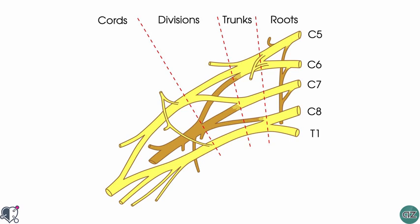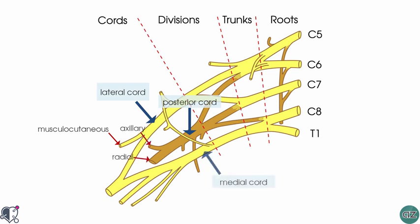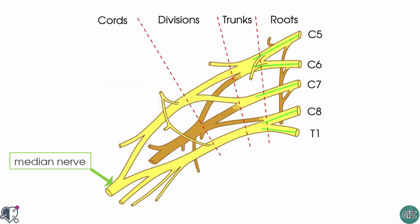There are five main peripheral nerves which arise from the brachial plexus as terminal branches and supply the upper limb. Arising from the lateral cord you have the musculocutaneous nerve. From the posterior cord you get the axillary nerve and the radial nerve. From the medial cord you get the ulnar nerve. And where the medial cord joins the lateral cord you get the median nerve. Tracing the median nerve backwards, you will see that it contains nerve fibers from all five nerve roots — C5 to T1.